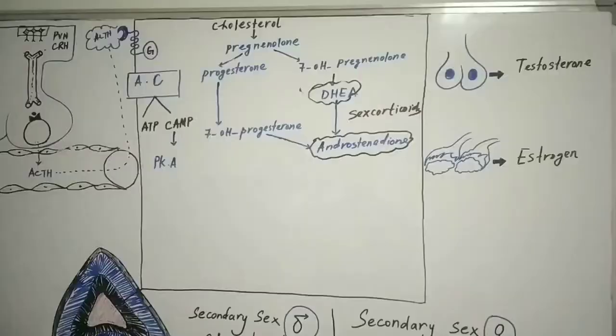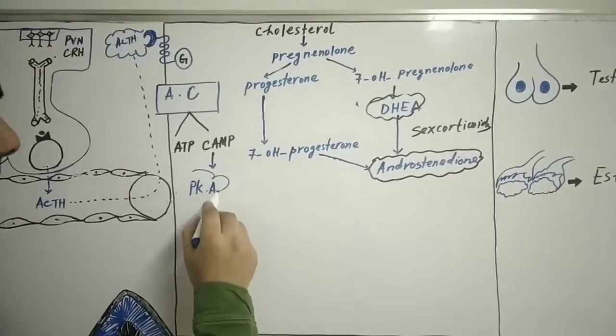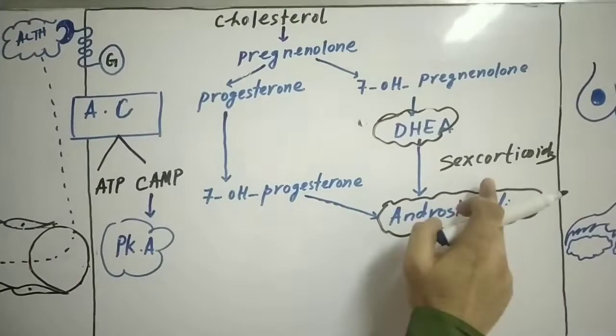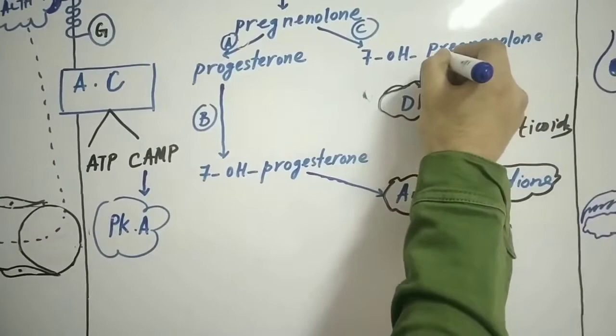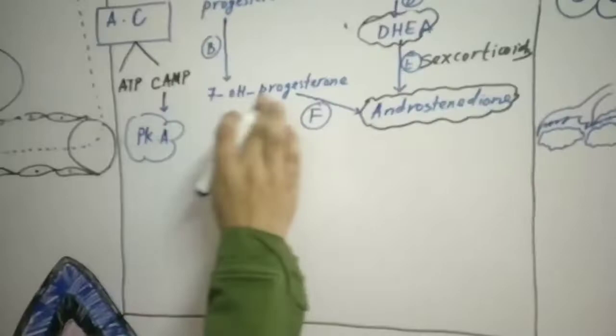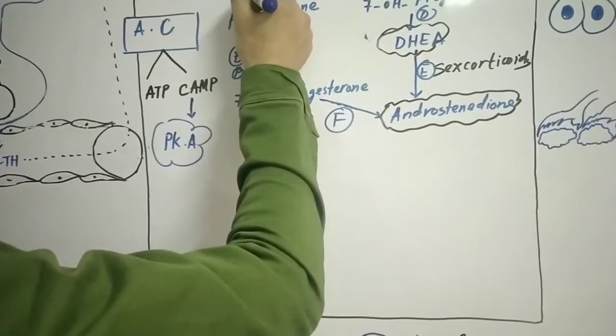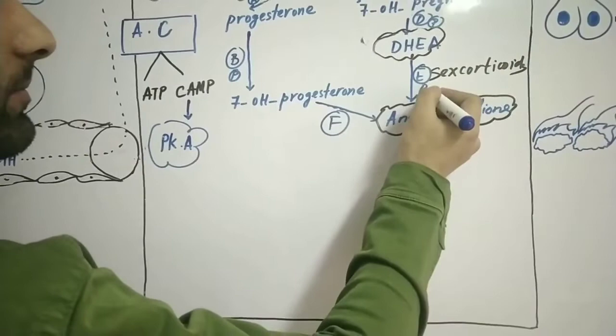I forgot to mention the function of protein kinase A. Protein kinase A phosphorylates all the enzymes which help in the synthesis of sex corticoids — for example, enzyme A, enzyme B, enzyme C, enzyme D, enzyme E, enzyme F. All these enzymes get phosphorylated by the addition of phosphate groups and become activated, eventually leading to the formation of sex corticoids.